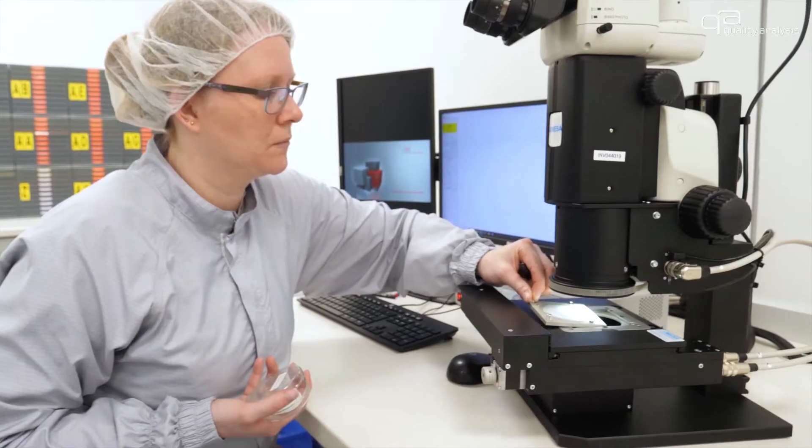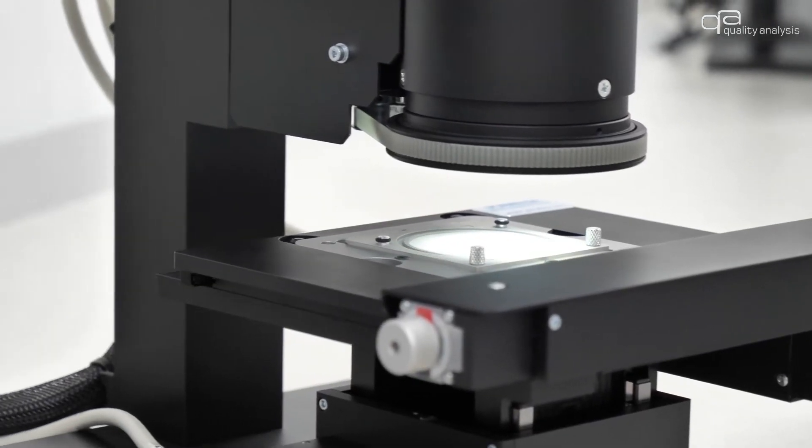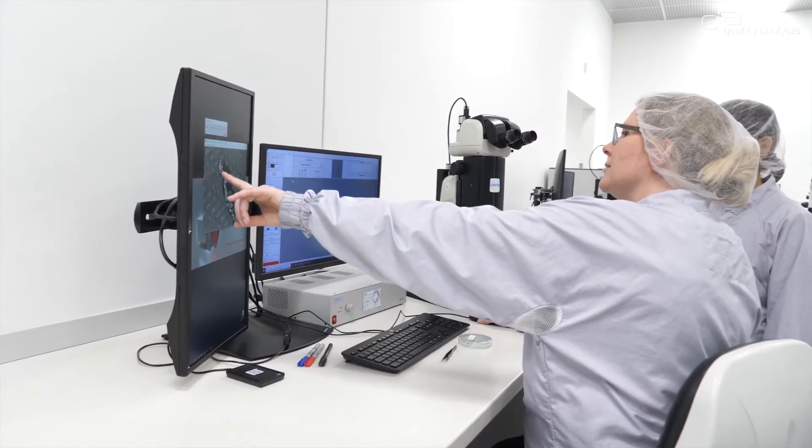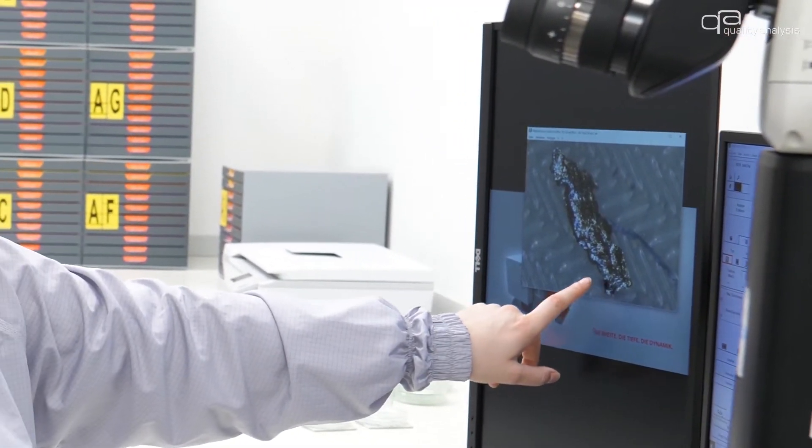After the extraction the different particle types are detected using reflected light microscopy. A differentiation is made between fibers, metallic shiny and non-metallic shiny particles.